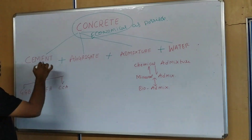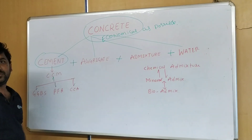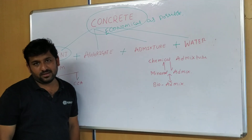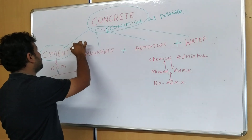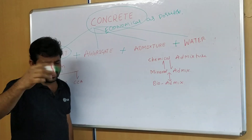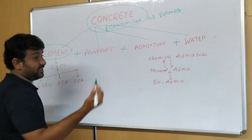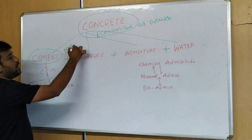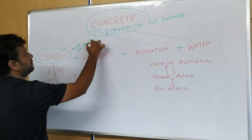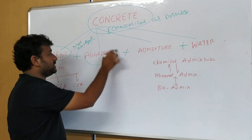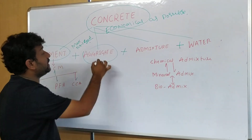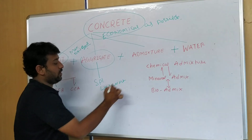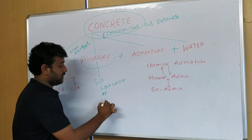The costing starts from cement — I think it takes the maximum part of the cost of concrete. Then aggregate is a must, so you cannot replace it, unless the concrete needs to go under a special condition like lightweight or high density.